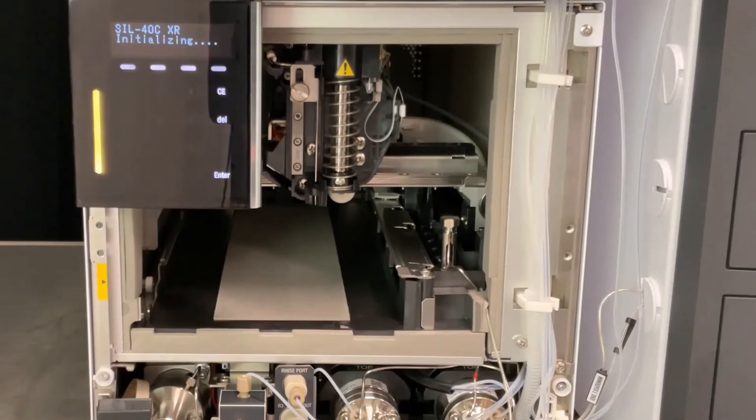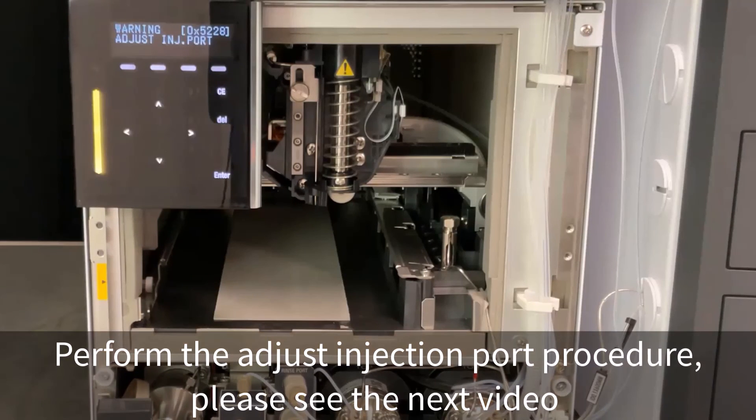Plug in the power cable and turn the main power switch on. Perform the adjust injection port procedure. Please see the next video on adjusting the injection port.